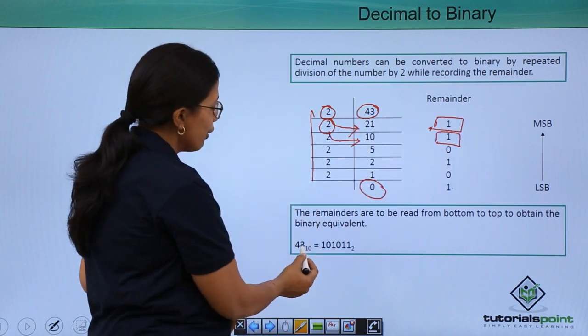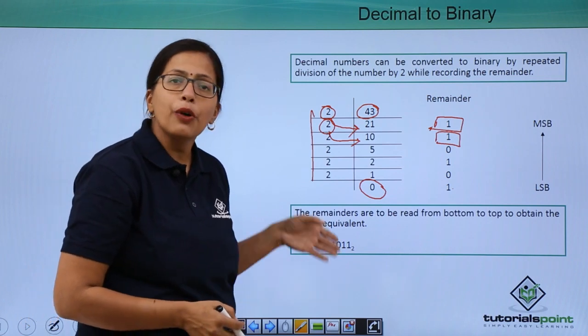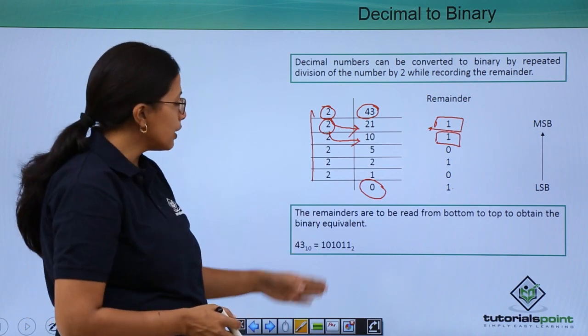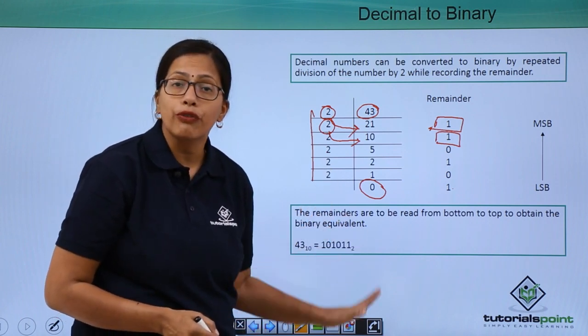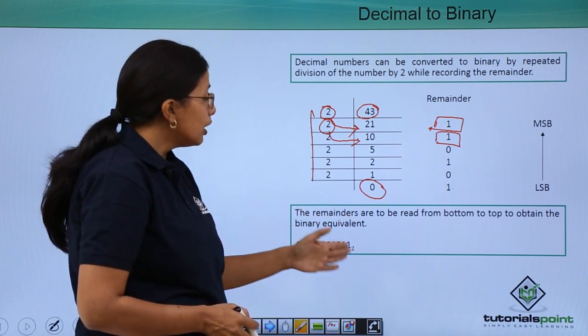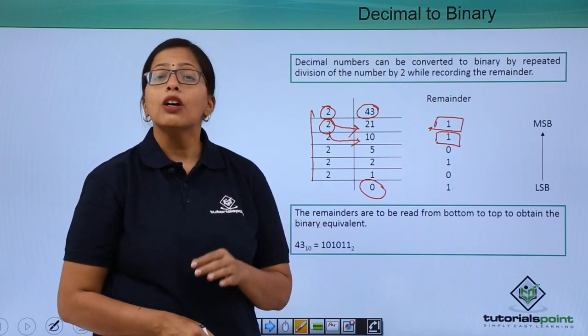So, essentially 43 to the base of 10, that means the decimal number 43 is equivalent to 101011 to the base of 2. That is the binary number 101011.